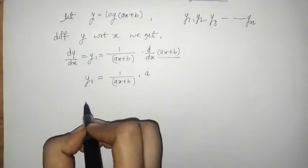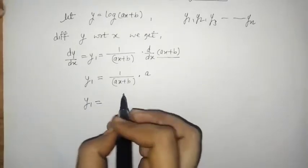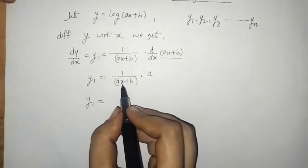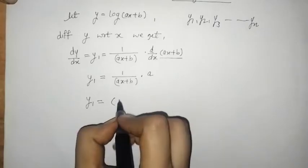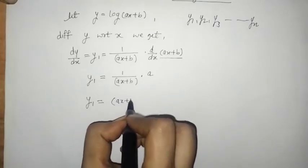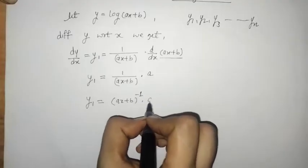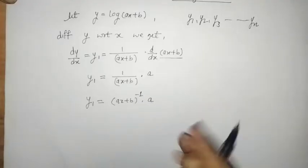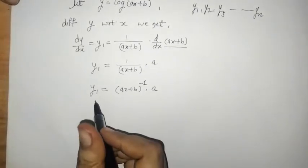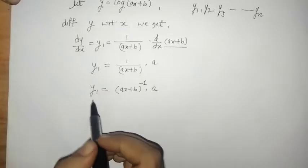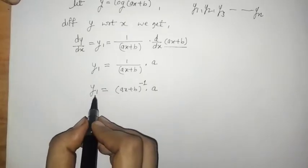So we got the first derivative. We can write this by taking the factor in the numerator: ax plus b raised to minus 1 into a. So this is the first derivative written down. Now we want the second derivative.